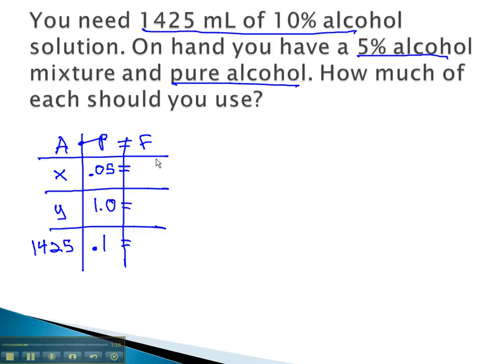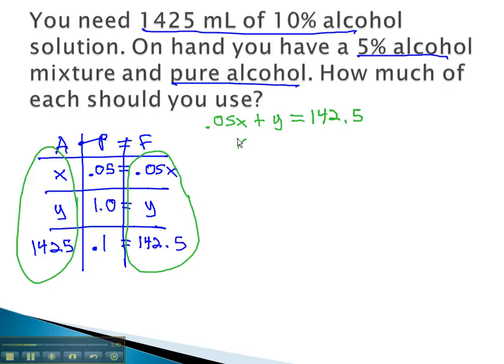We can now calculate our finals by multiplying to get 0.05x, 1y, and 142.5. We can now get our equation from the last column: 0.05x plus y, the pure, equals 142.5. The first column, x plus y, equals 1425.